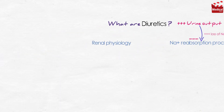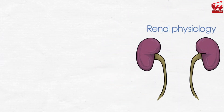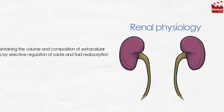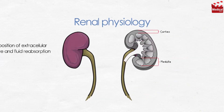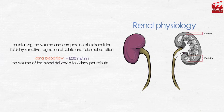Let's briefly talk about some renal physiology basics. The kidneys play an important role in maintaining the volume and composition of extracellular fluids by selective regulation of solute and fluid reabsorption. Each kidney is composed of two parts: cortex and medulla. Renal blood flow — the volume of blood delivered to the kidney per minute — equals 1,200 milliliters per minute.